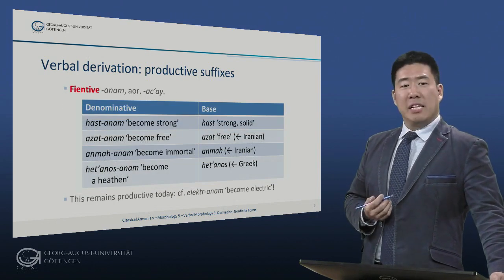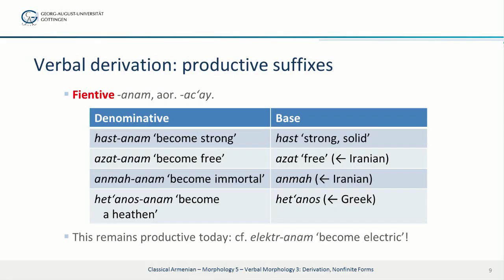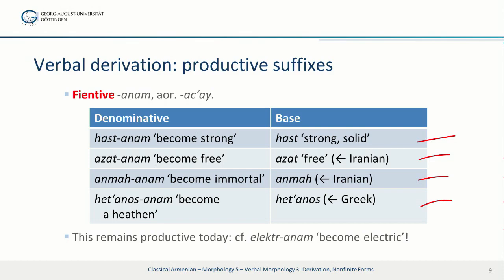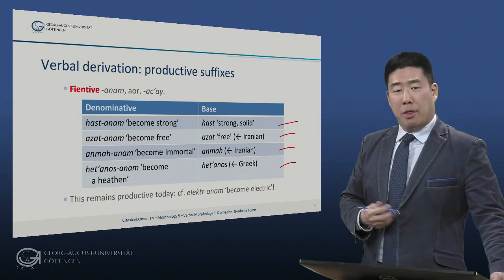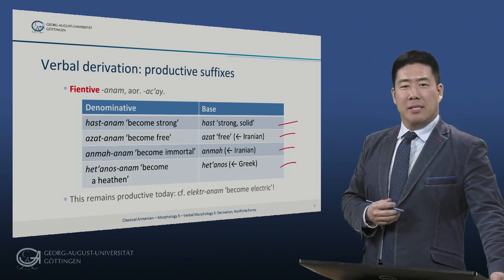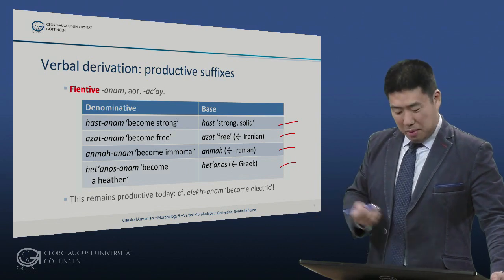There is also a completely productive fientive suffix -anam, which can form denominative verbs from pretty much any base. We have hast 'strong, solid' → hastanem 'to become strong.' Iranian borrowings such as azat 'free' → azatanem 'become free,' and anmah 'immortal' → anmahanam 'I become immortal.' Here's a borrowing from Greek: hetanos 'heathen' → hetanosanam 'become a heathen.' This remains productive all the way down to the modern period — in texts written in the late 19th century we have forms like yedektanam 'become electric,' for example, yerevan yedektanai 'Yerevan goes electric,' when electricity came to the modern Armenian lands.